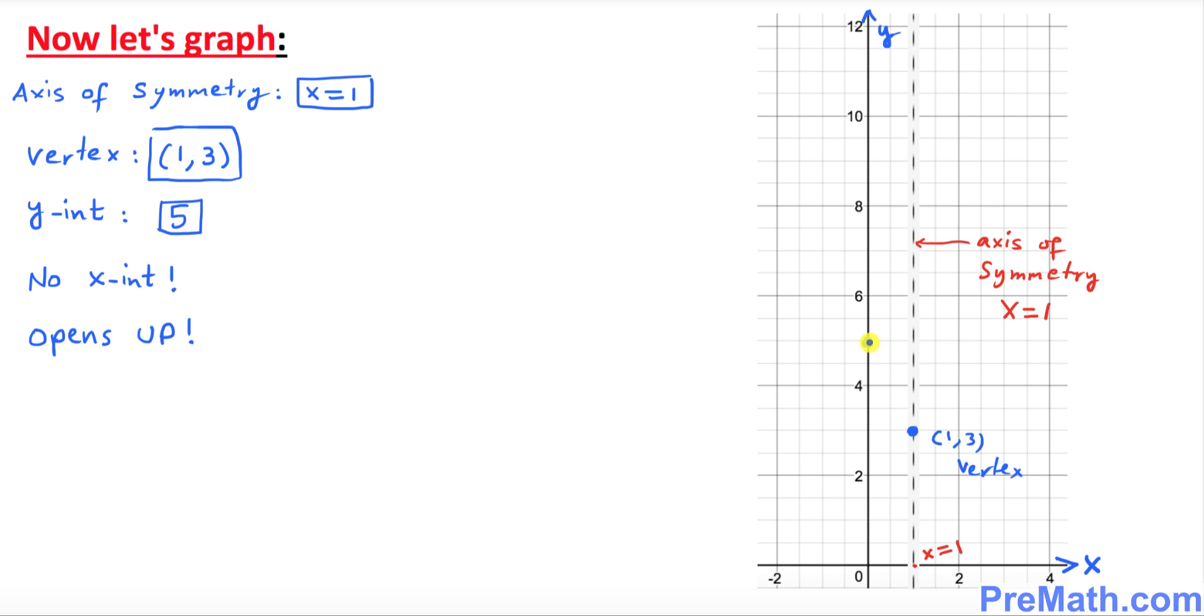Our y-intercept is 5. This is our y-intercept, which could be written as also 0 comma 5.